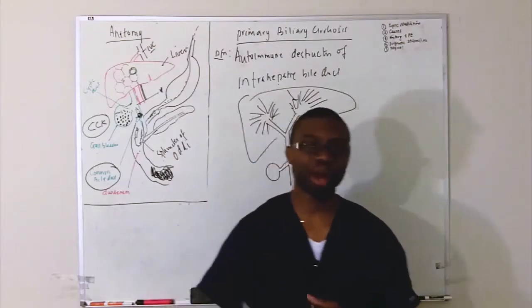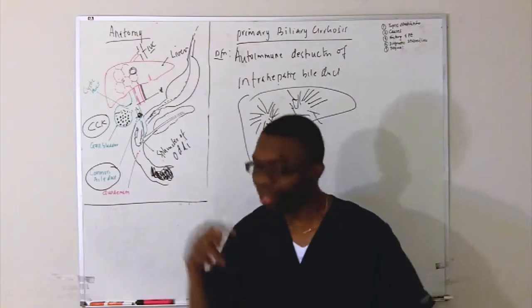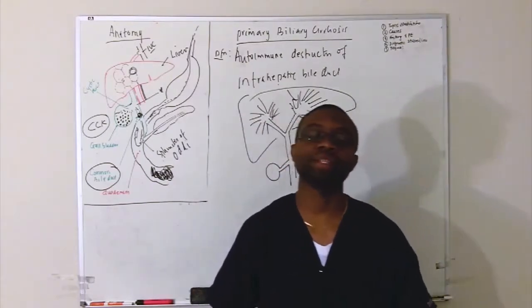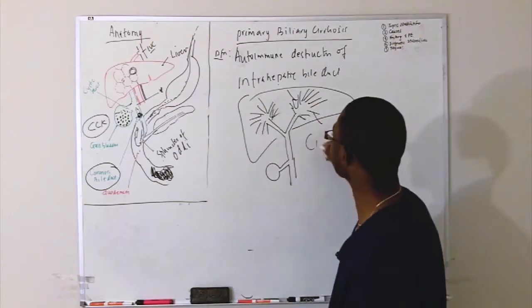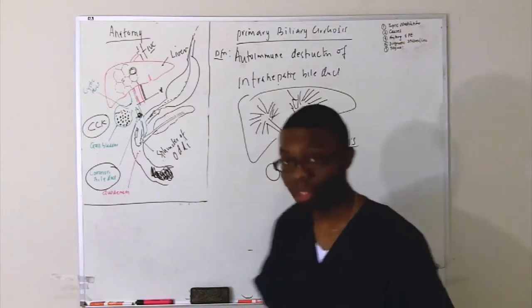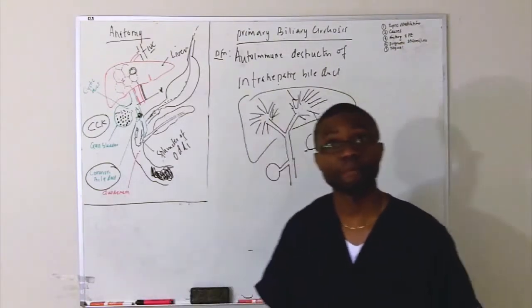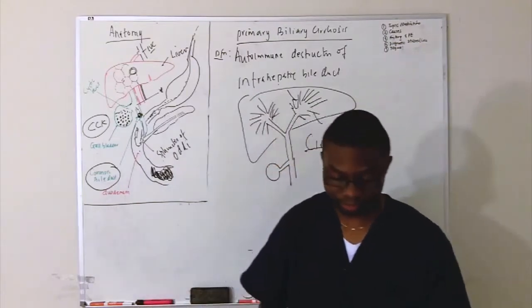You get eventually remodeling, you get repair, you get strictures. Eventually you get another inflammation. Eventually what happens? They fibrosis, scar, they become cirrhotic. So they get cirrhosis of the liver eventually. But it's the autoimmune destruction of the biliary tree that it starts with.